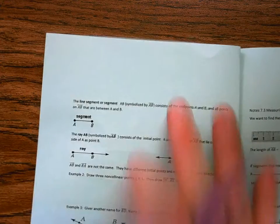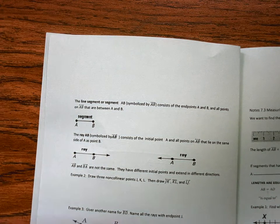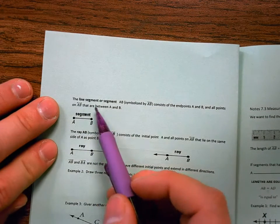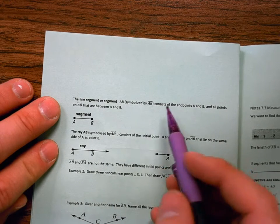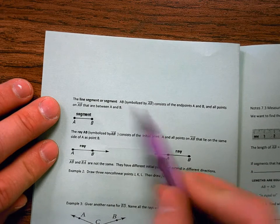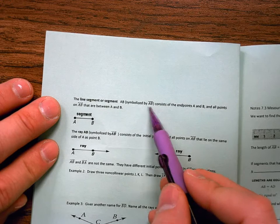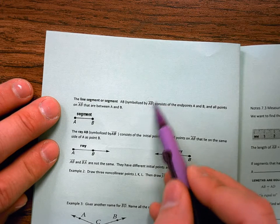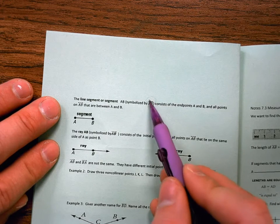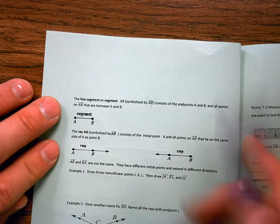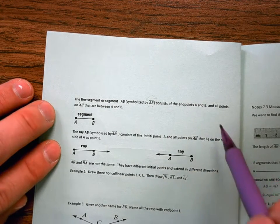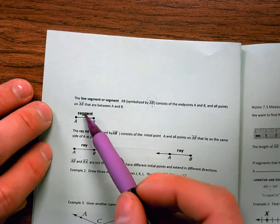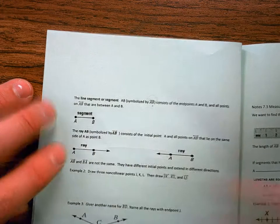Turn the page. Now we're on page two. Okay. The line segment AB is symbolized by AB with a line over it. Now can we see why the arrows are important? If you don't draw an arrow, you're talking about a line segment. A line segment consists of endpoints A and B. And all the points on AB are between AB.